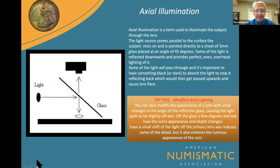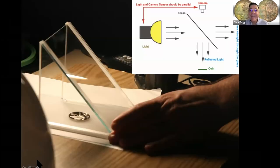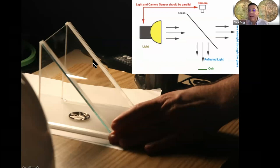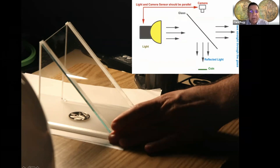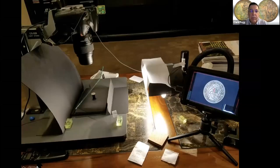They still have the axial illumination box in the museum at the ANA. You'll see them at coin shows too. I made the 45-degree unit out of plexiglass — the glass panel sits right on top. The coin sits inside the device, the light comes in through this way and strikes the glass. You put a piece of black on the opposite side to absorb the light. It works great.